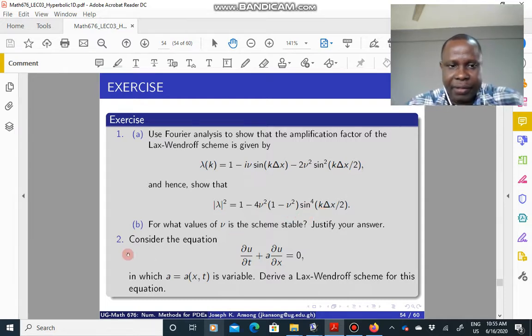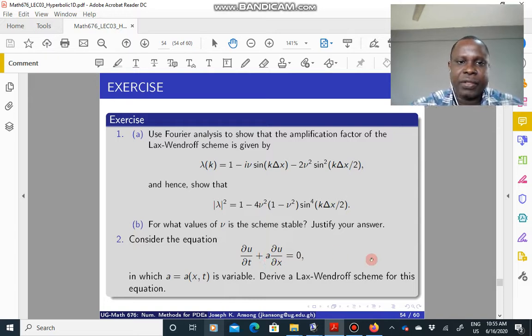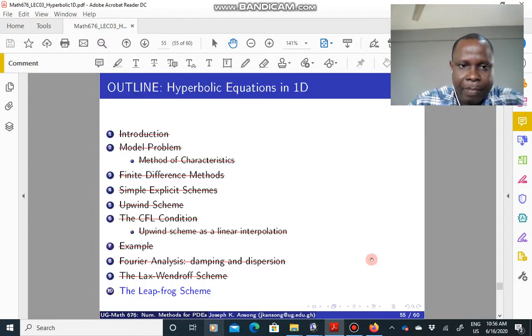Now once you have this, the B part wants you to find the values of nu for which the scheme is stable, and of course justify your answer. It has to be stable. That's why we are basically looking at it as an alternative to the upwind scheme. And then the second one is to consider this advection equation, but in this case, your c is variable. It's a function of x and t. So you want to derive a Lax-Wendroff scheme for such an advection equation where this is no longer a constant.